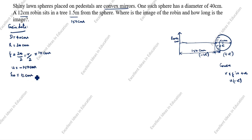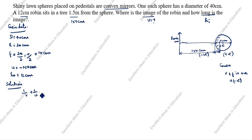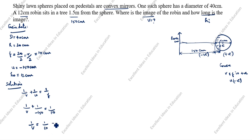We need to find: where is the image of the robin, and how long is the image? So we will find v and we will find h-i. Solution: using the mirror formula, 1/v + 1/u = 1/f. We don't know v, so 1/v plus 1/(−150) equals 1/10. Therefore, 1/v equals 1/10 plus 1/150.